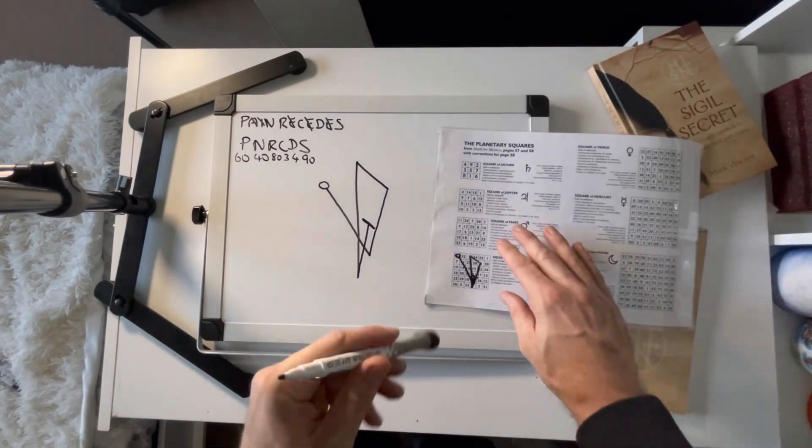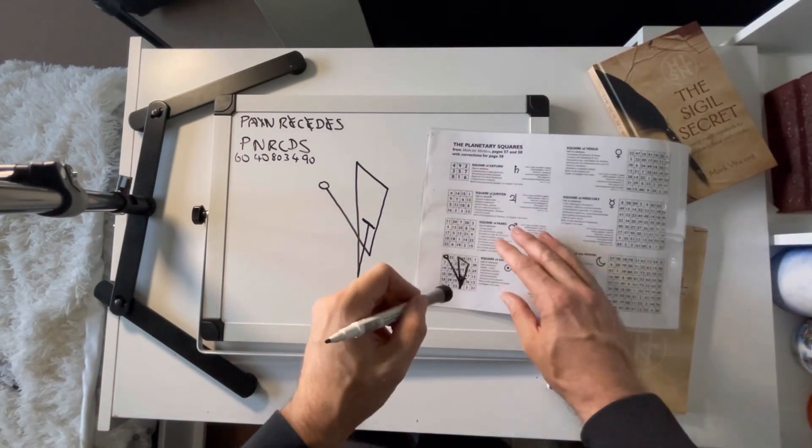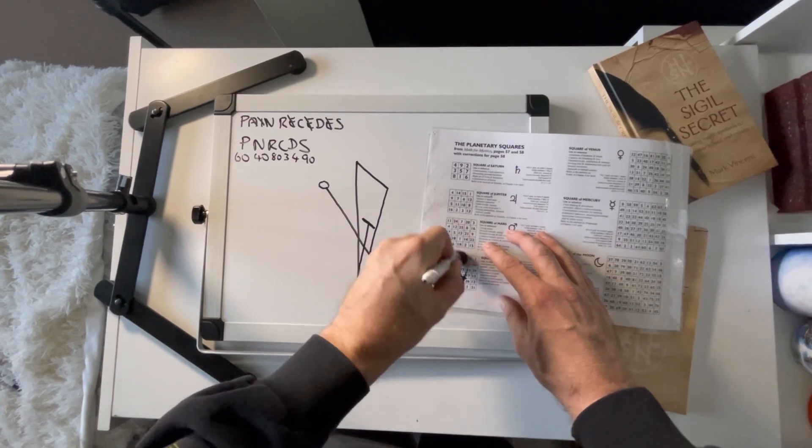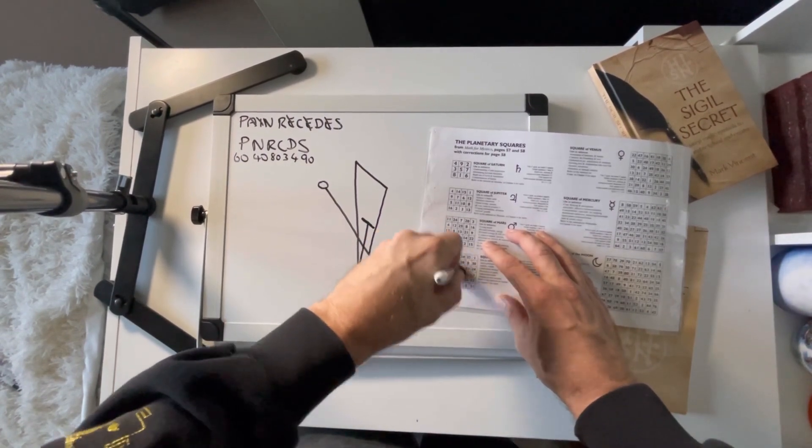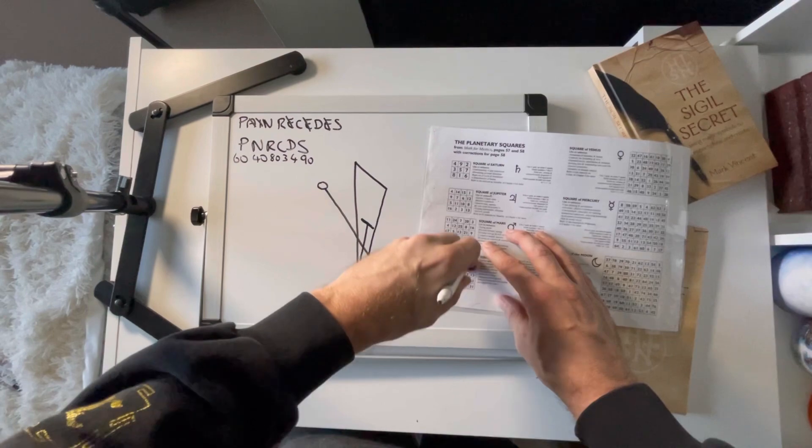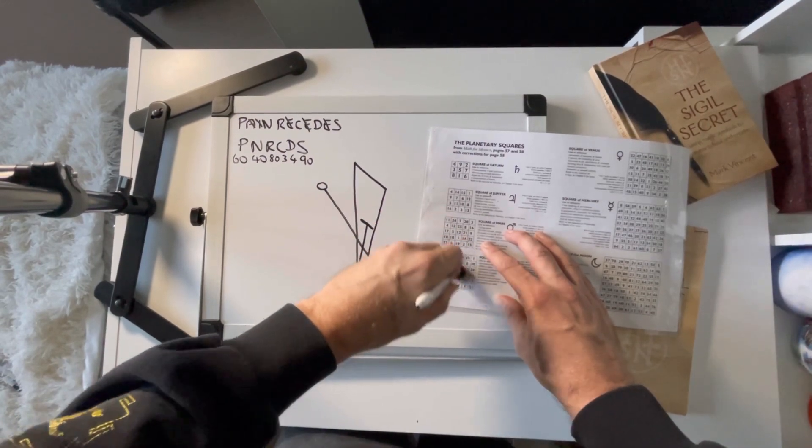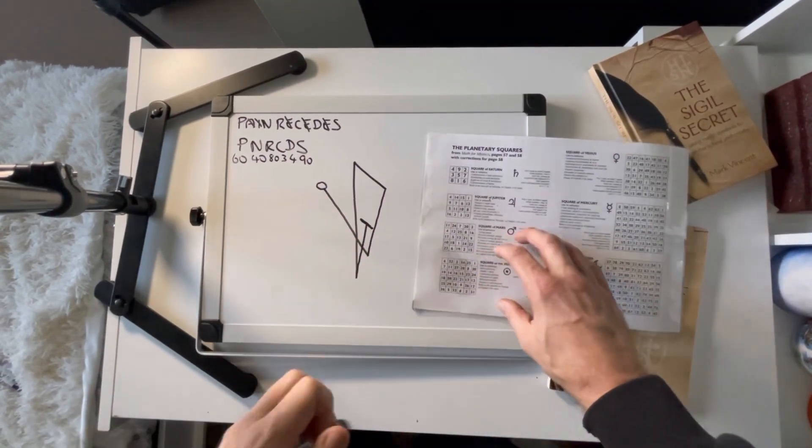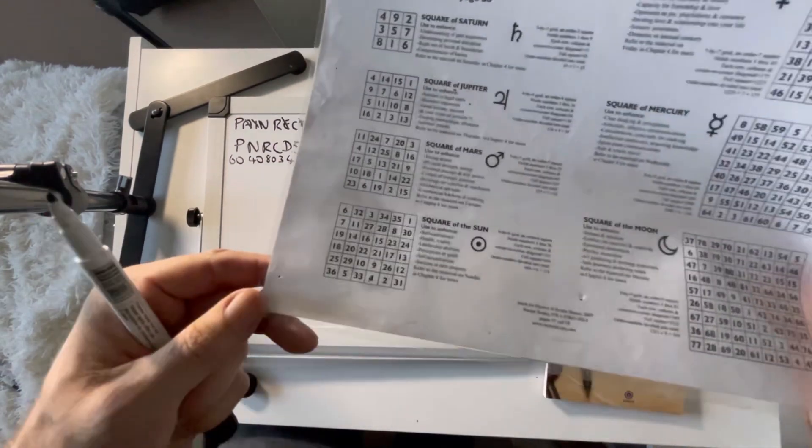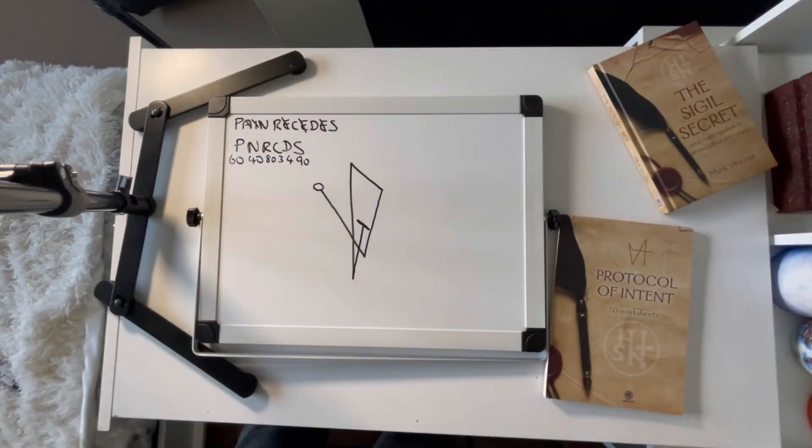All I've done here is printed some of these squares off the internet, laminated them, and then I can just erase them. They're ready for use again. It's quite a handy way of preparing sigils for this kind of work.